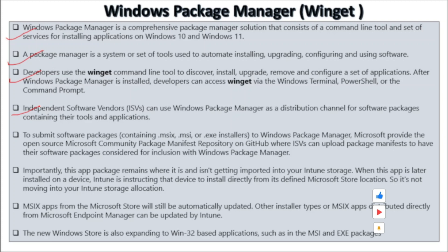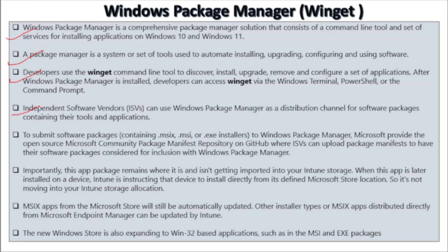Independent software vendors (ISVs) can use Windows Package Manager as a distribution channel for software packages containing their tools and applications. To submit software packages containing MSIX, MSI, or EXE installers to Windows Package Manager, Microsoft provides the open-source Microsoft Community Package Manifest repository on GitHub where ISVs can upload package manifests to have their software packages considered for inclusion with Windows Package Manager. Importantly, the app package remains where it is and is not imported into your Intune storage.